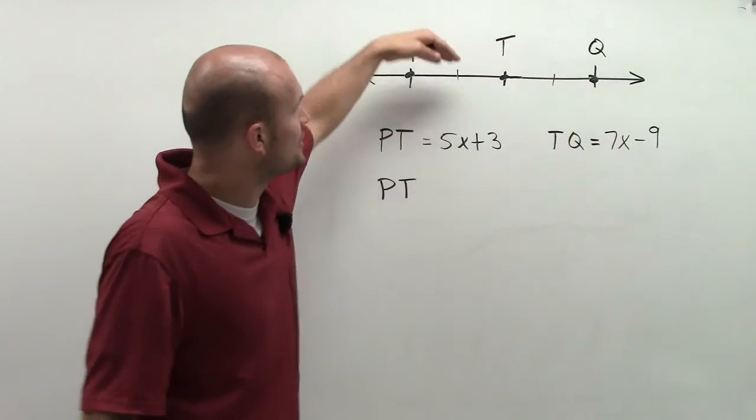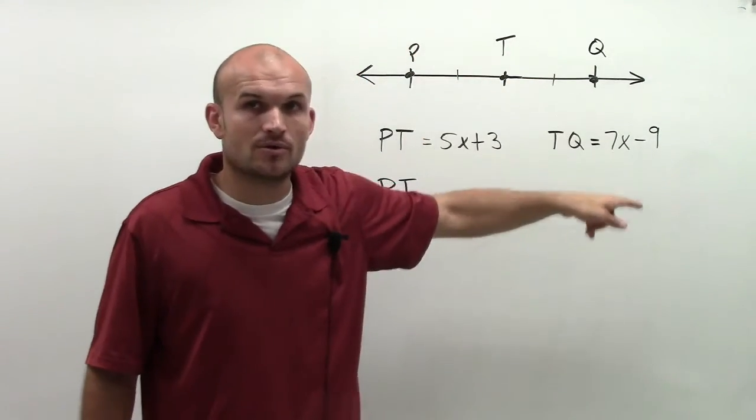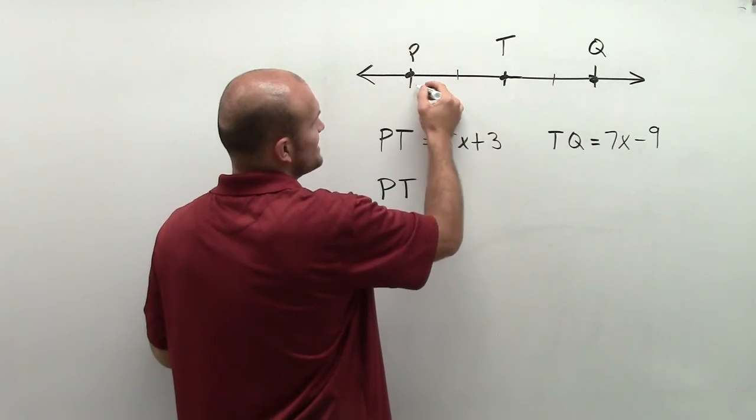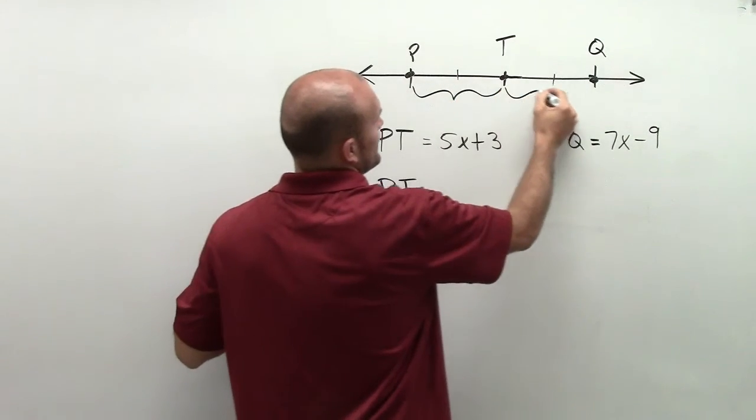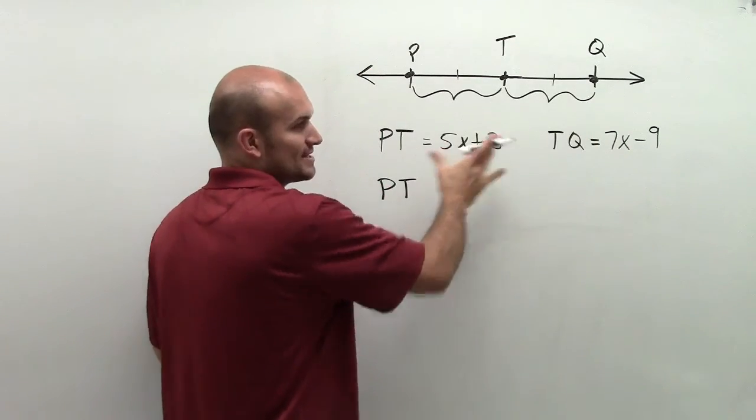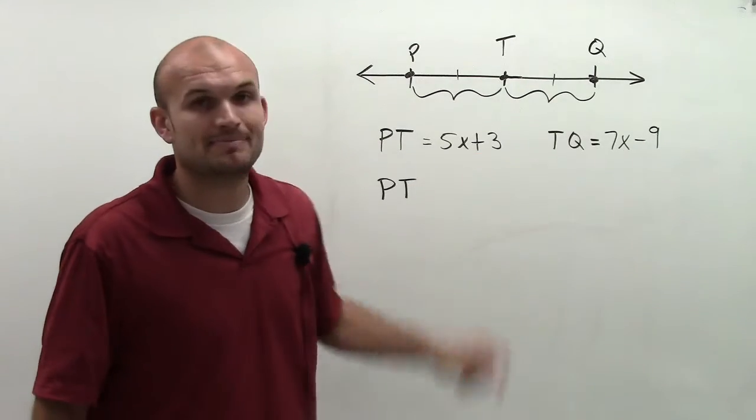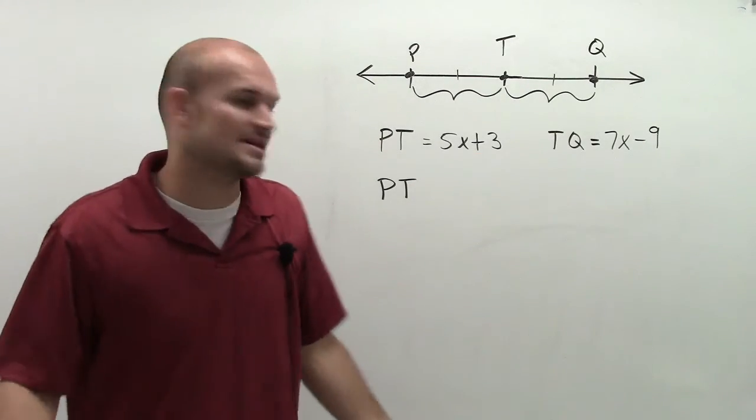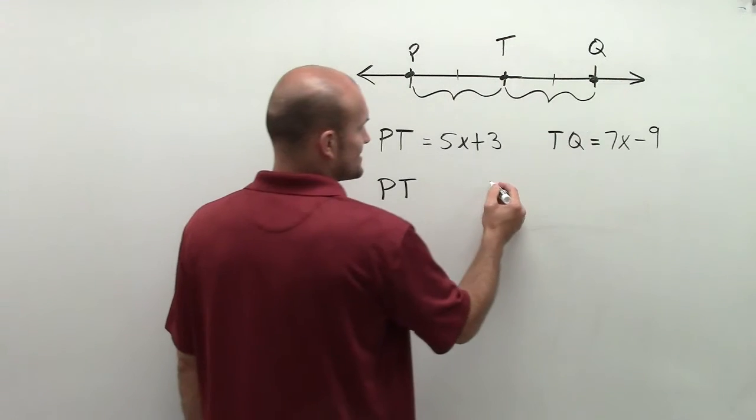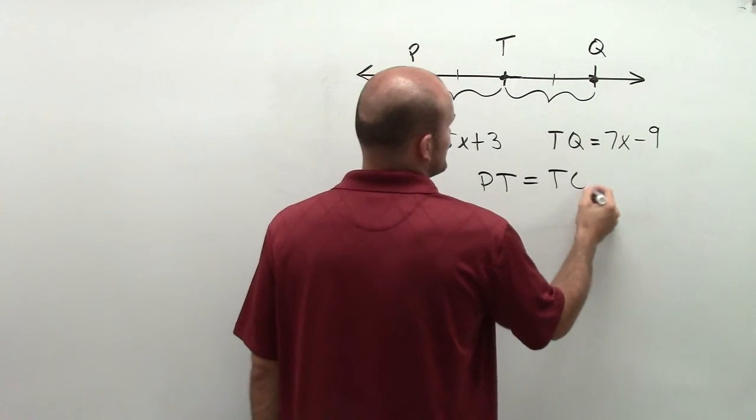So since I know that PT is equal to TQ, what I can say is if this distance is equal to this distance, then whatever the values that I wrote in their distance—so unfortunately I don't have 23 equals 23, right? I've been given an expression to represent their distances. So what I can say then, as long as I know that PT is equal to TQ...